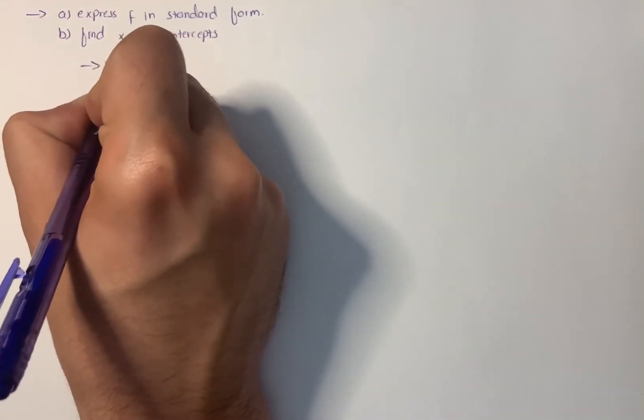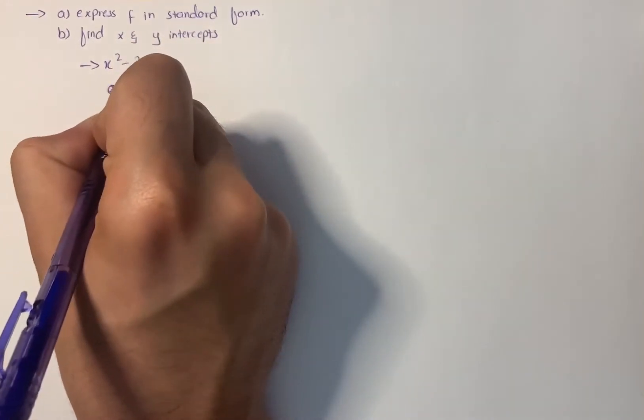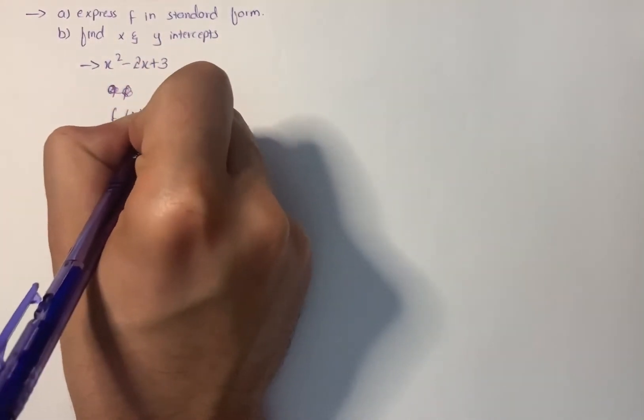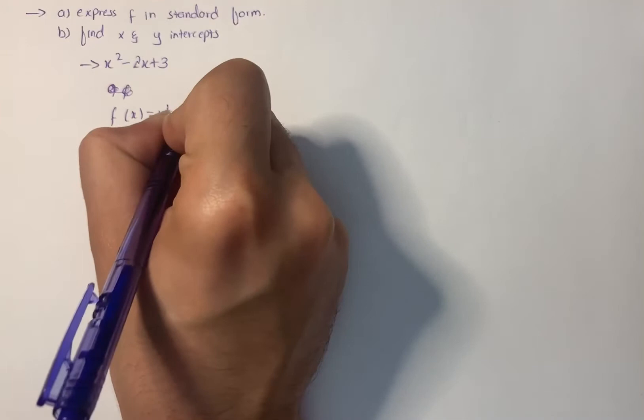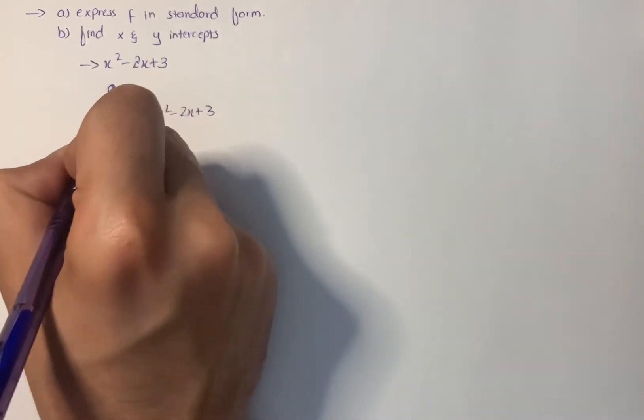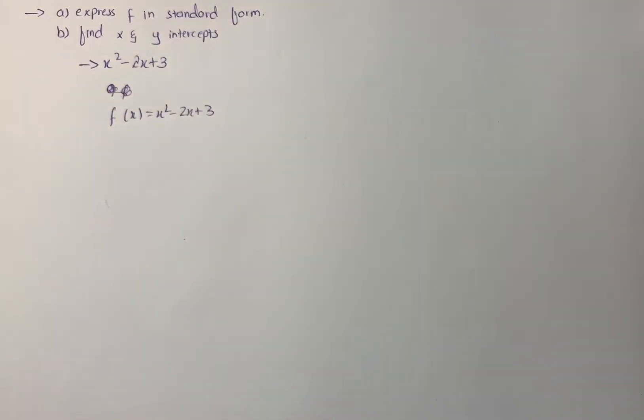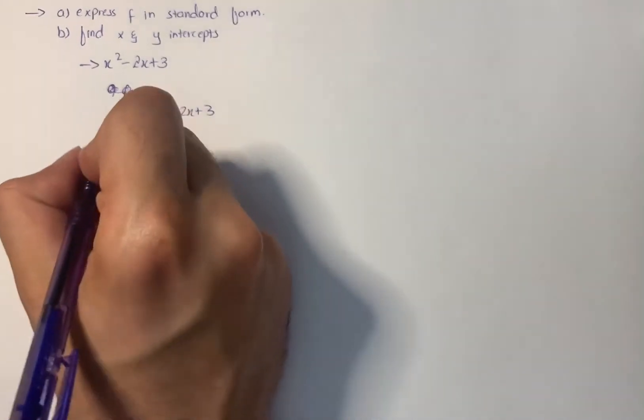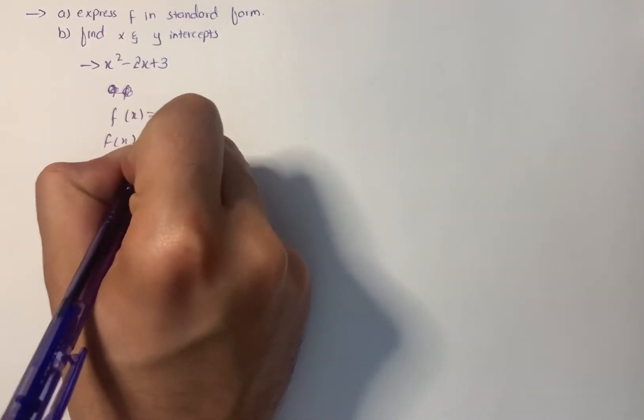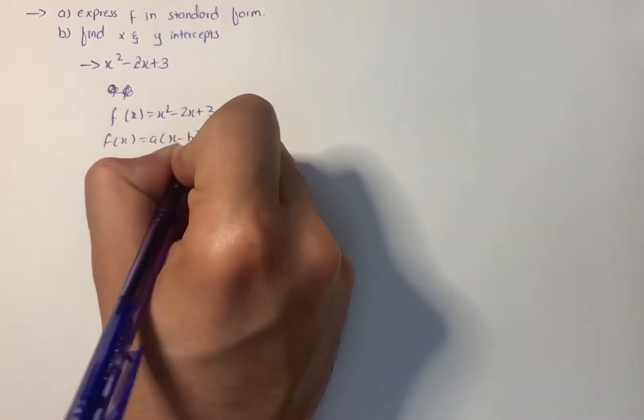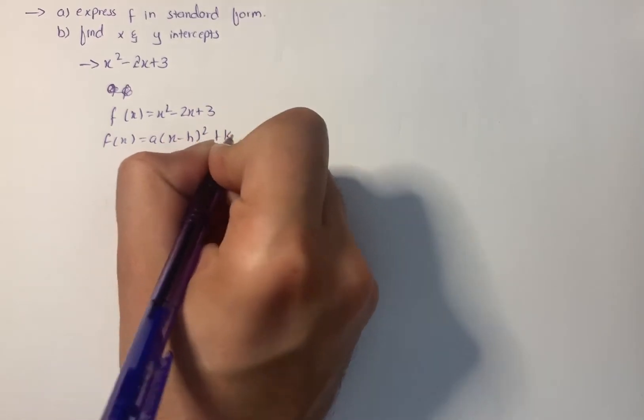We have f(x) = x² - 2x + 3. We will write the standard form of a quadratic equation: f(x) = a(x - h)² + k. Let this be equation 1.